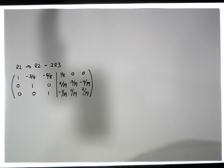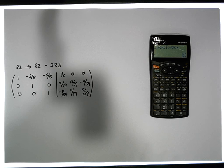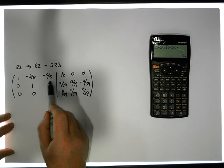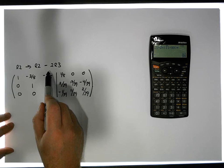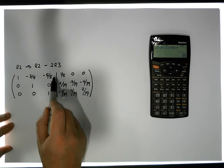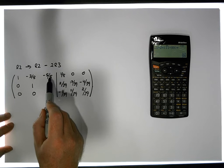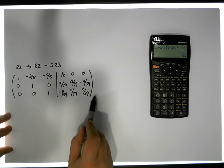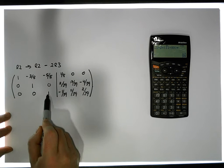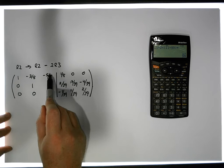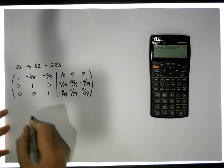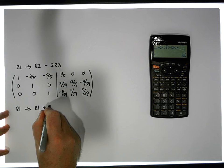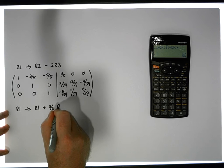So this is what our new matrix now looks like, so I can move that over here. We're nearly there. What I need to do is convert everything above this pivot into a zero. So I'm going to work off this minus 5/8 and convert that to a zero. If I multiply row three by 5/8 and add that to this, it would become a zero. So row one is going to be row one's current value plus 5/8 times row three's value.